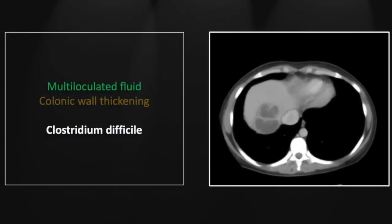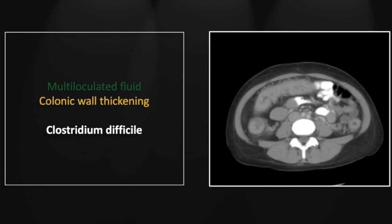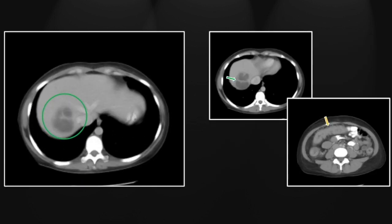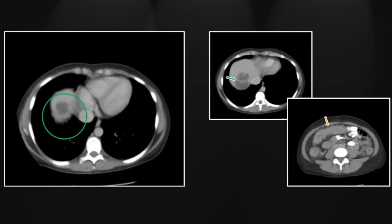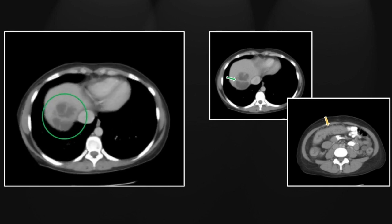Our next case is Clostridium difficile causing a hepatic abscess. This abscess is interesting in that it is multiloculated — on the cine you'll appreciate all the little loculations within there that are relatively well-circumscribed, and will certainly make you think of hydatid disease as a possibility. But lower in the abdomen, we are given another finding that helps us put this one all together: extensive pancolonic wall thickening highly suggestive of Clostridium difficile infection. Here is that multiloculated abscess — the kind of thing that might make you think of hydatid disease were it seen in isolation.